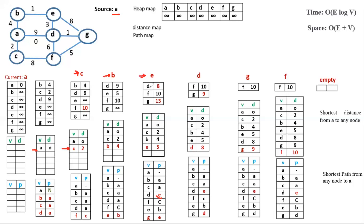Now in the list we have three nodes: D has the minimum distance of 8, so D is the next current node. We remove D to the distance map with distance 8. Nodes connected to D in the list are G and F. Regarding F: 8 plus 6 equals 14, but the distance of F is already 10, and since 10 is less than 14 we do not change F. Regarding G: 8 plus 1 equals 9, which is less than 13, so we relax G to 9 and update the parent of G from E to D.